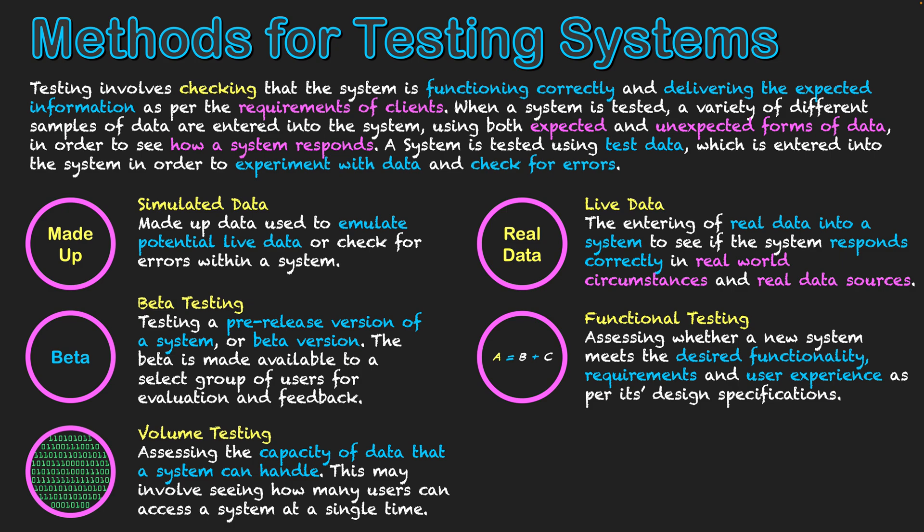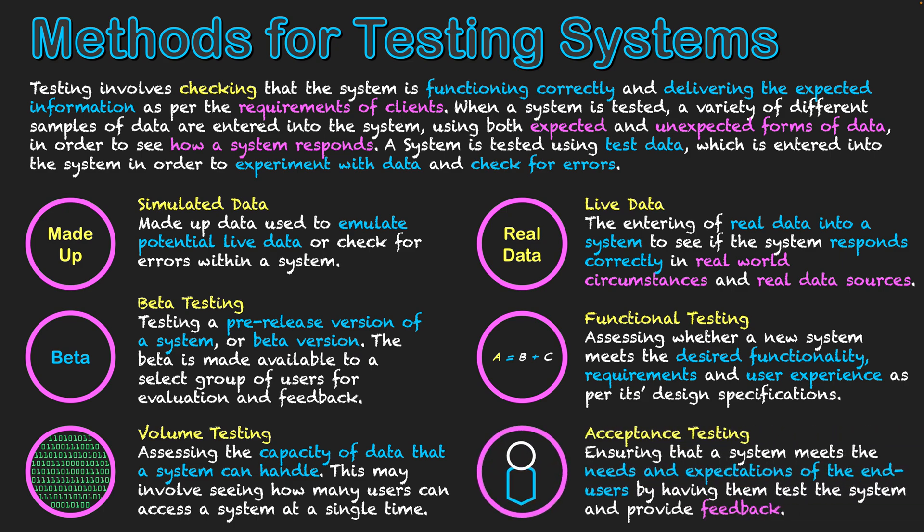The final type is acceptance testing, which may follow a live data test done in a functional environment by users. This is where users sign off that their needs are being met by the system — they confirm it's doing what they want and providing the right user experience. Alternatively, if the system isn't achieving those goals, users give feedback about incorrect information, glitches, or a poor experience. With that feedback, changes can be made and then re-shown to the user through acceptance testing until they can sign off that everything is good.